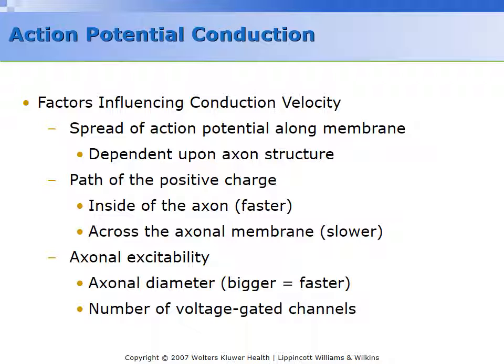Now let's look at some of the factors that may influence the velocity. The velocity of action potential propagation depends on the spread of the potential on the membrane. Anything that flows — water through a hose or action potential through a nerve — obeys the same rules: the flow will take the path of least resistance. If we have a garden hose with a lot of holes in it, then some of the water would leak out.